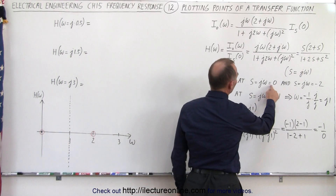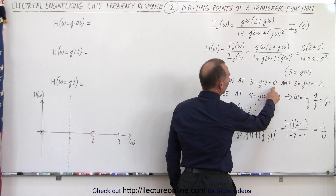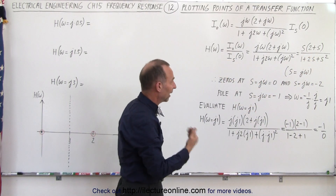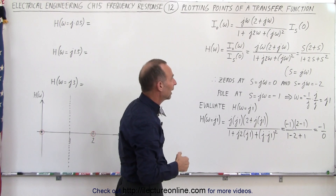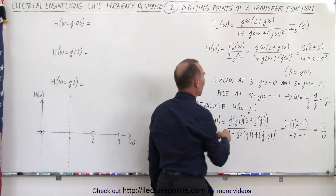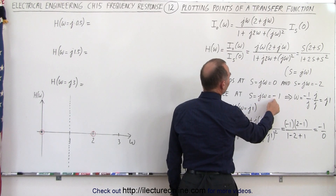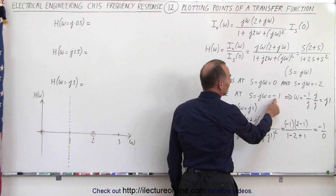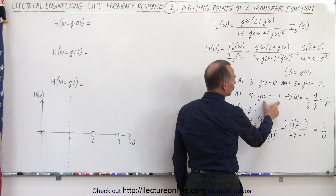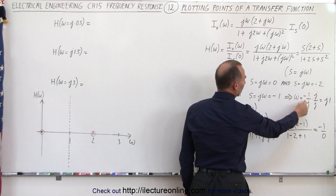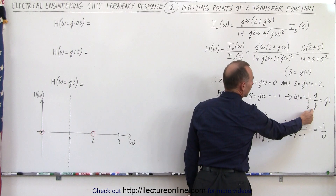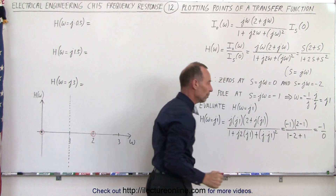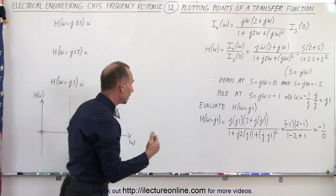We found that when s equals zero — or in other words jω equals zero — or when s equals negative two in the numerator, we get a zero. So there are two zeros: one for s equals zero, and one for s equals negative two. We also found that we had poles at jω equal to negative one. If we solve for ω by dividing both sides by j, then multiplying top and bottom by j, ω becomes j times one, or j times two.